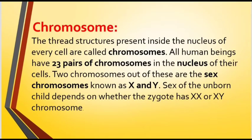Chromosomes: The thread-like structures present inside the nucleus of every cell are called chromosomes. All human beings have 23 pairs of chromosomes in the nucleus of their cells. Two of these are the sex chromosomes, known as X and Y.